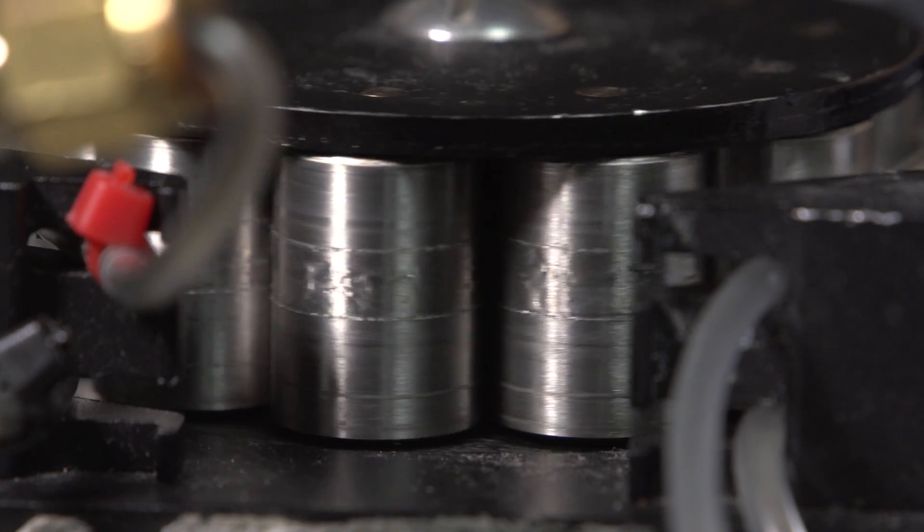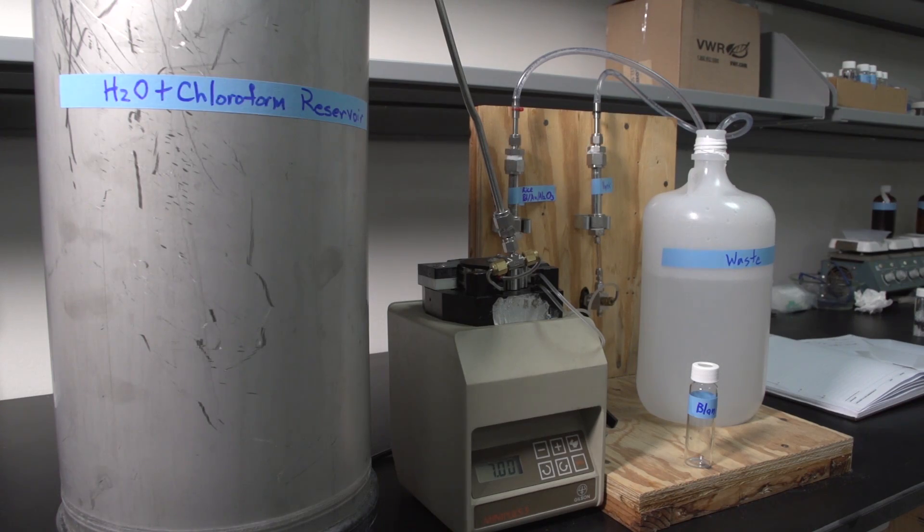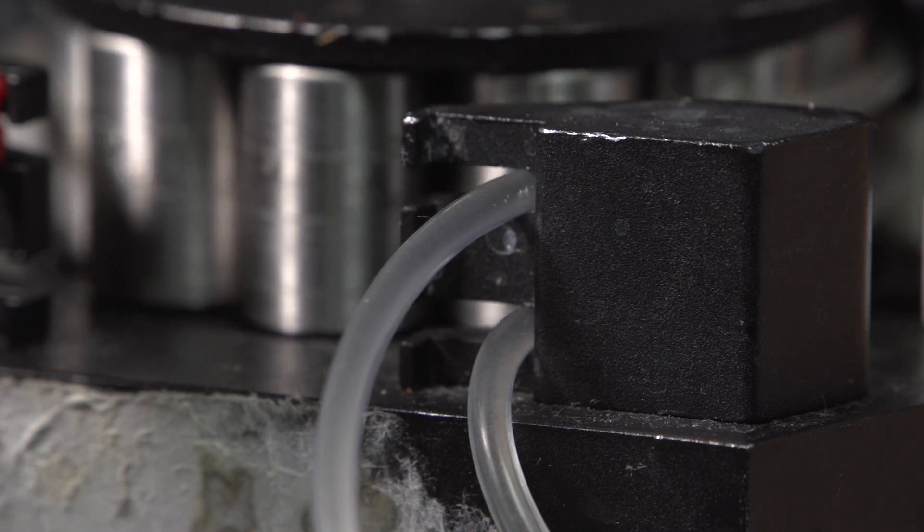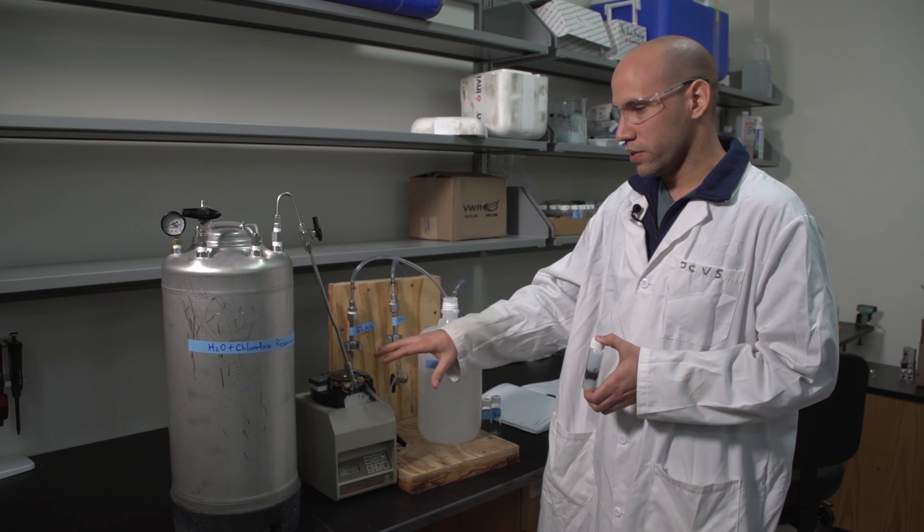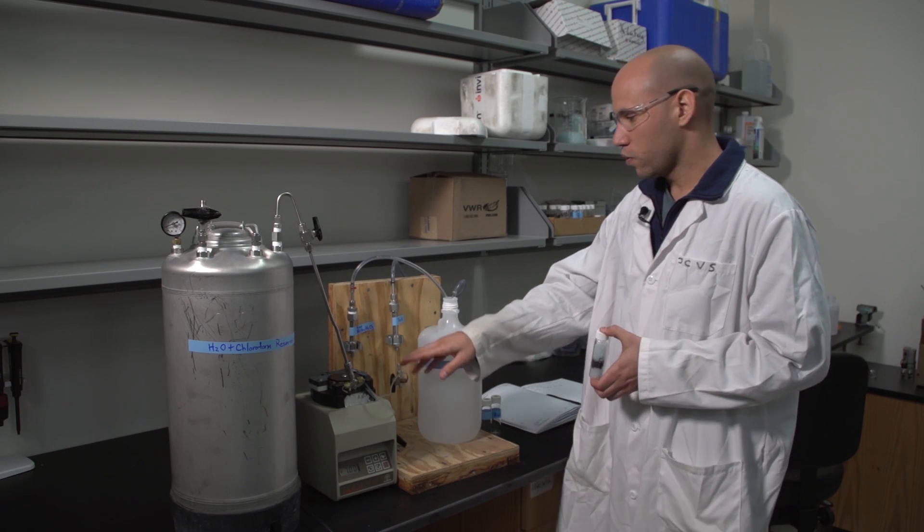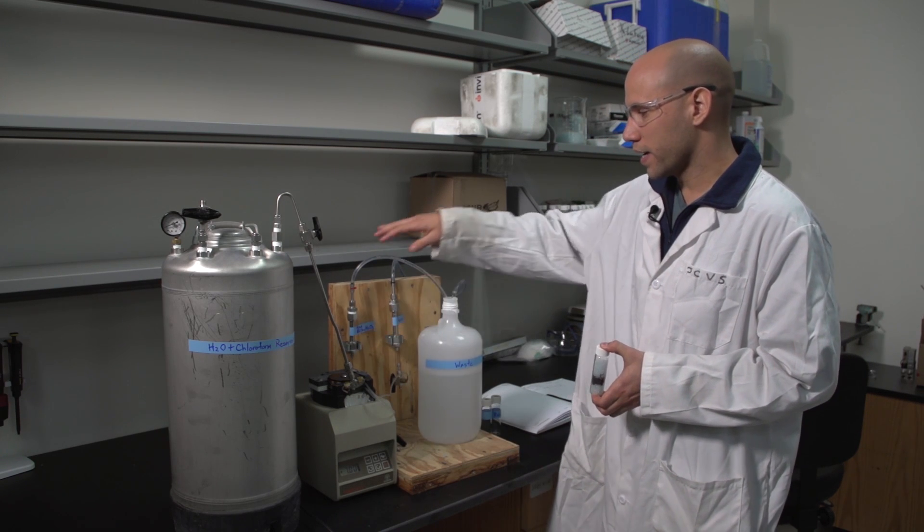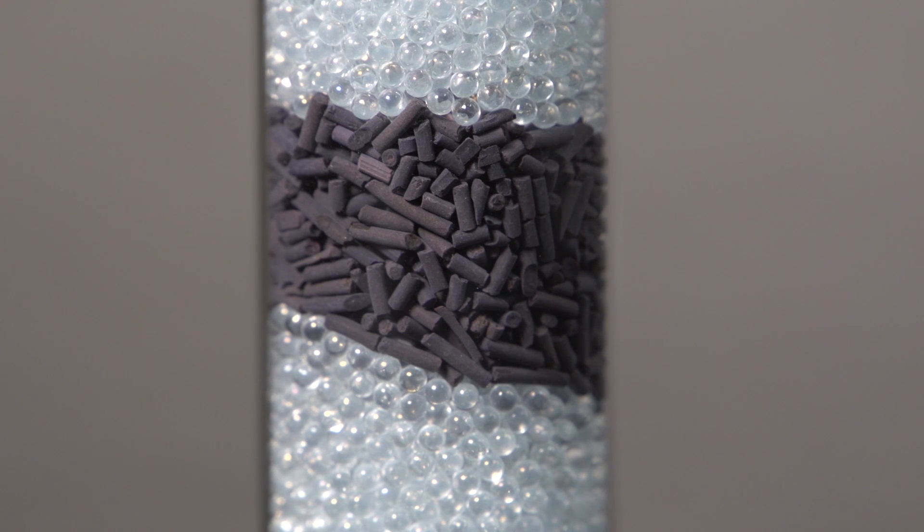What we have here is our mini flow reactor. This is where we have been doing our preliminary studies. It consists of a water reservoir where we have chloroform, water, and hydrogen. The water will be saturated with hydrogen. It will flow through our system. The pump is going to flow the water through our reactors where we have these palladium gold pellets.